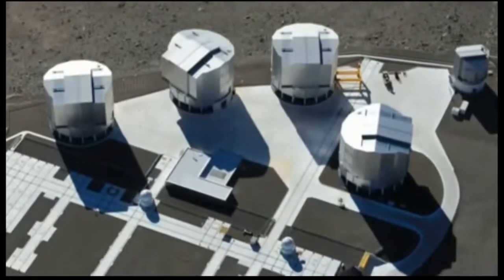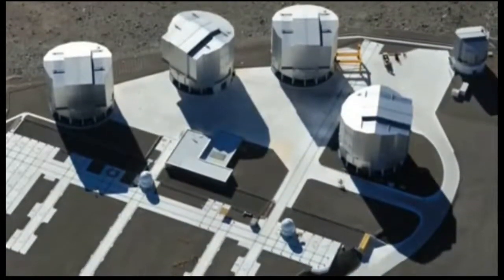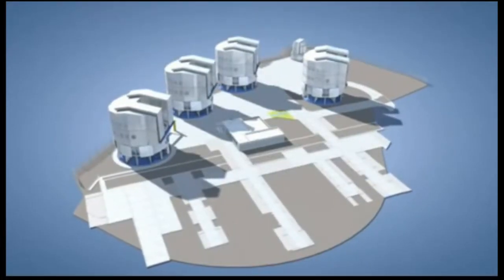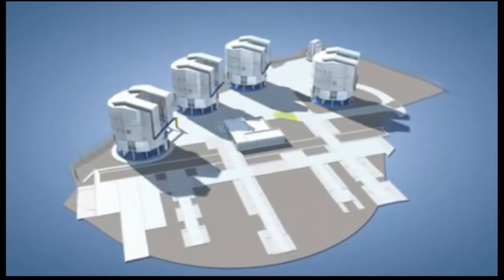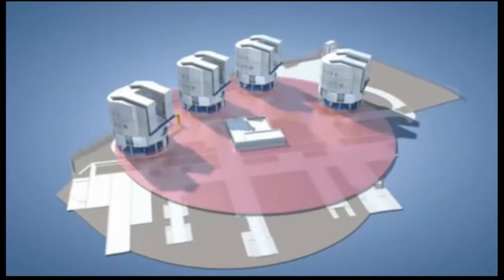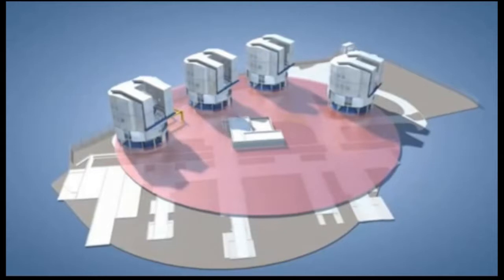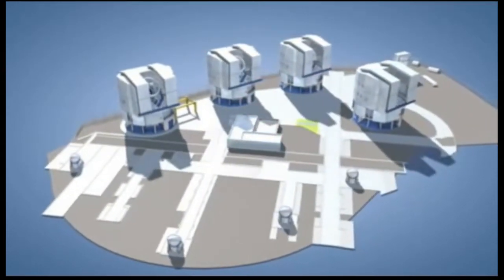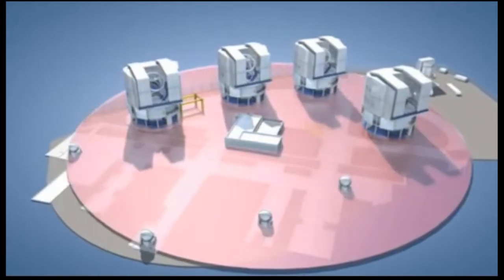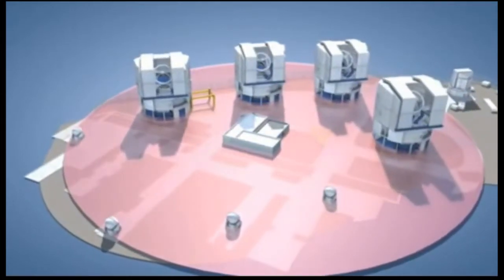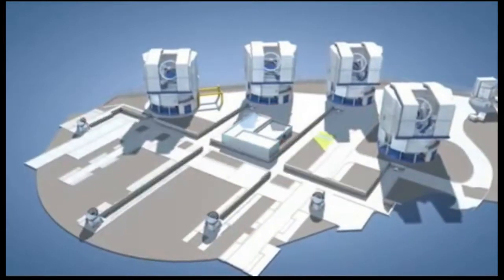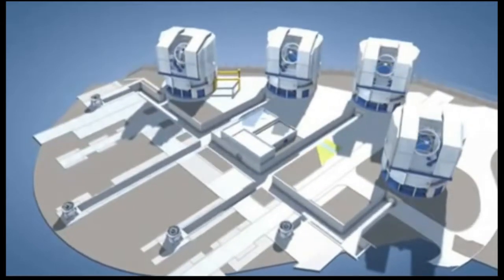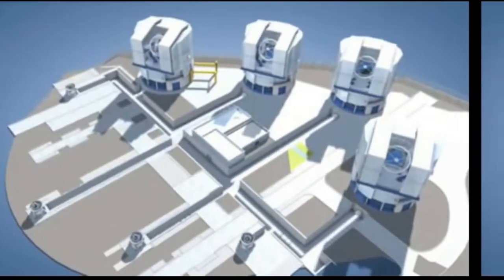The VLT design always had the use of interferometry very much in mind. The four 8.2-meter unit telescopes of the VLT were built in a roughly trapezoidal configuration that can generate a virtual telescope mirror of up to 140 meters across. In addition, four movable 1.8-meter auxiliary telescopes can be combined in a configuration with an equivalent diameter of up to 200 meters. This gives images up to 25 times sharper than those from a single VLT unit telescope.